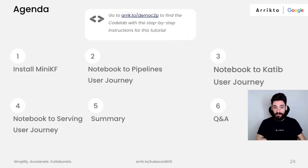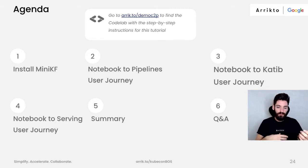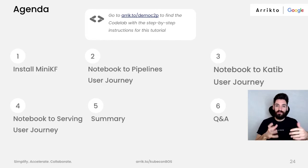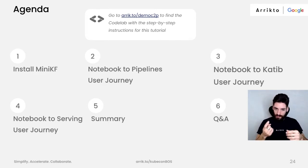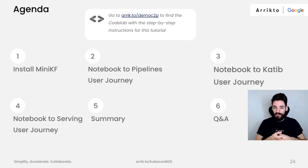Here's our agenda. We'll start from deploying Mini-KF, our local development environment, then learn how to convert notebooks to pipelines, how to scale up the workflow with Katib and hyperparameter tuning, and finally how to serve the best model. Check out the codelab URL where you can follow all the steps of this tutorial at your own pace.